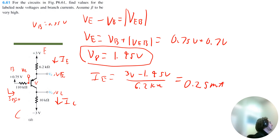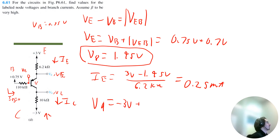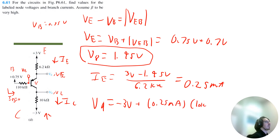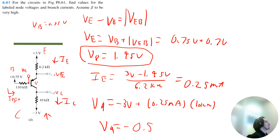The collector current is the same as the emitter current at 0.25 milliamps. Traveling up from the circuit, V9 equals negative 0.5 volts. So V9 equals negative 0.5 volts, and that solves circuit D.